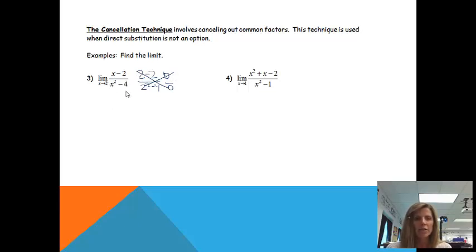I do notice that the denominator is a difference of squares so it can be factored. So what I'm going to do is try to rewrite the problem so that I can use direct substitution. So I'm going to have x minus 2 and the denominator, x squared minus 4, is going to factor as x minus 2 times x plus 2. And when we do that you'll notice that I now can cancel x minus 2 because it's multiplication down below.